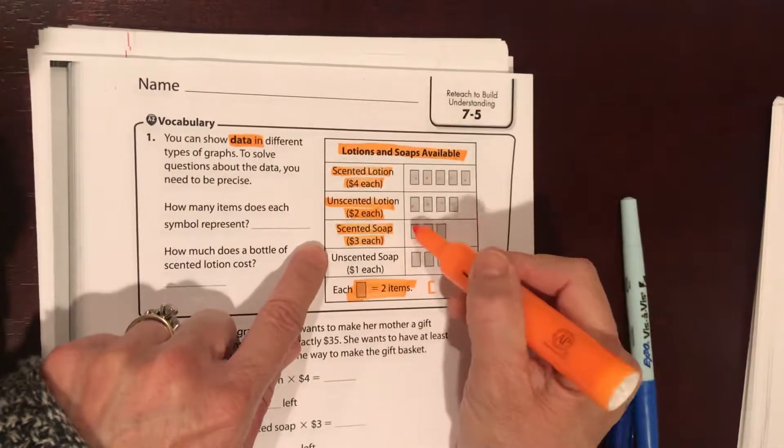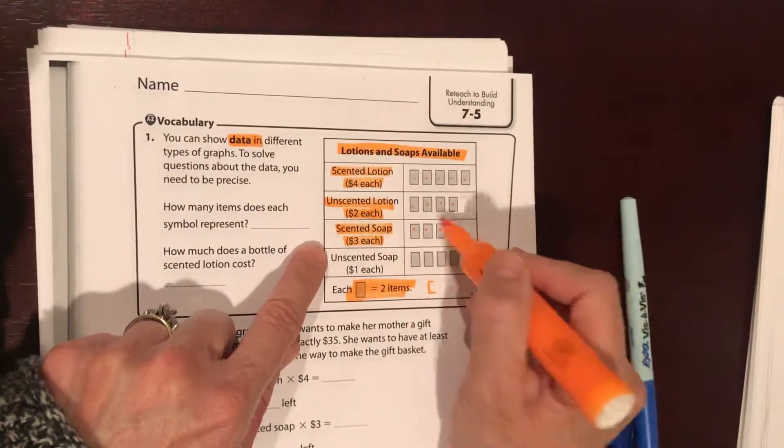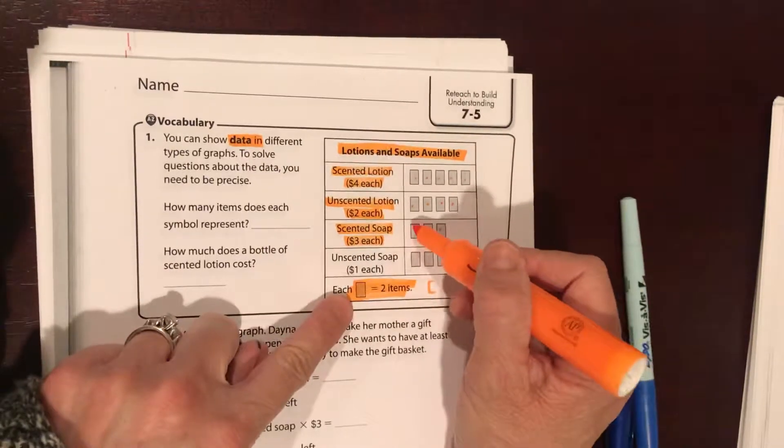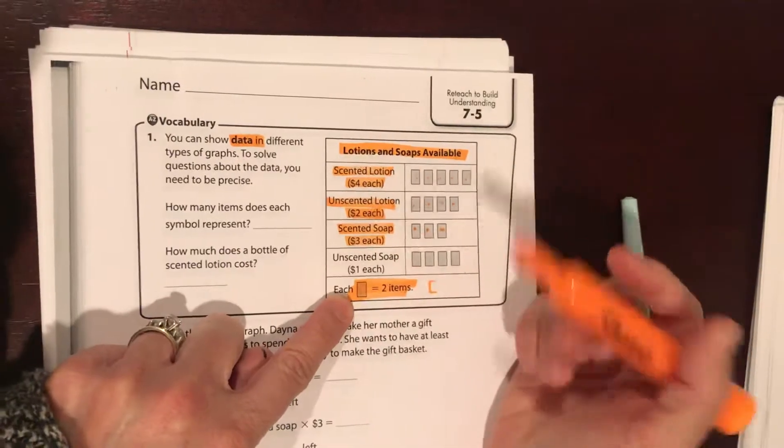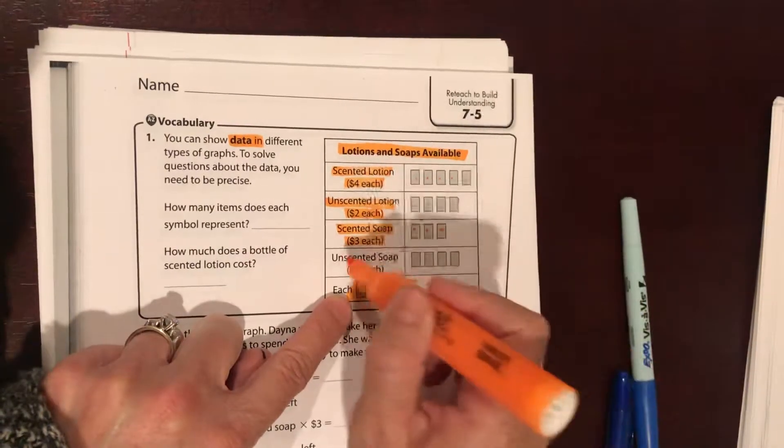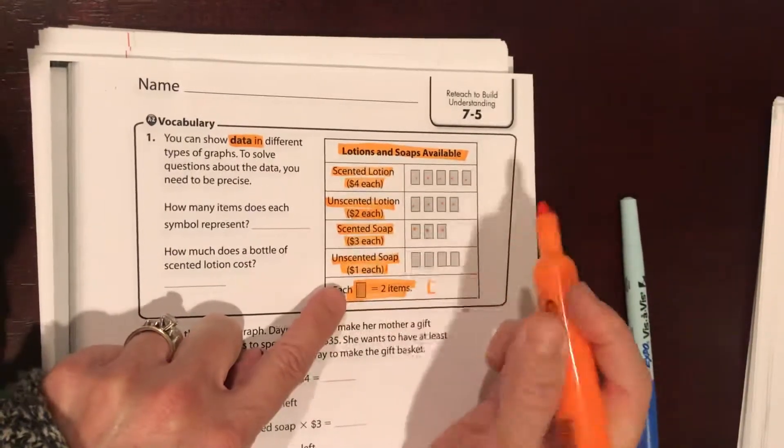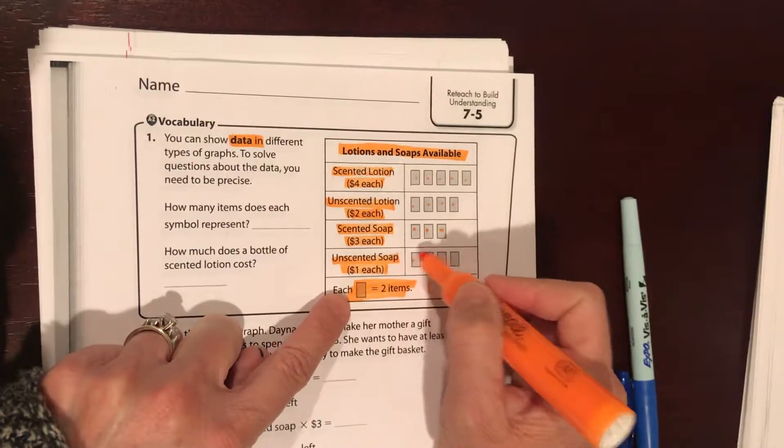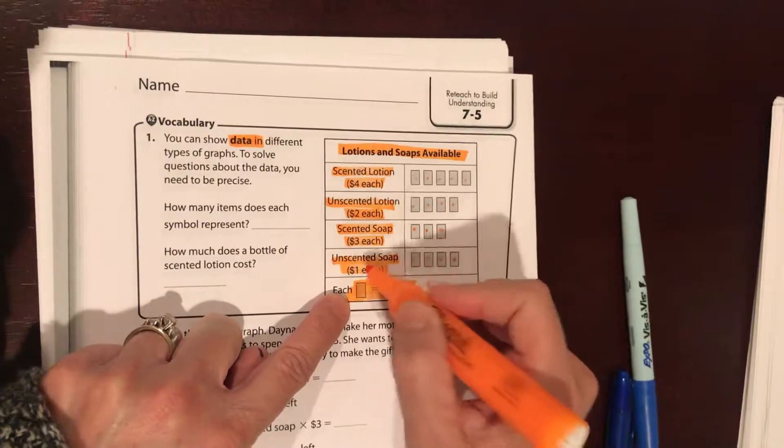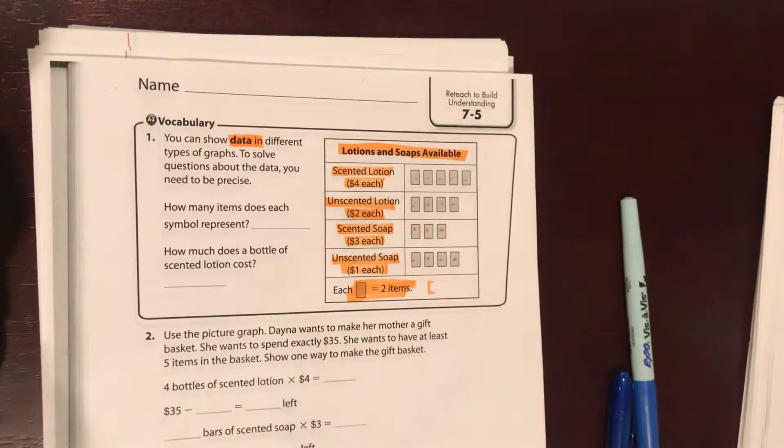Scented soaps are three dollars each, there's six available times three, that would be eighteen dollars. And then unscented soap, bars of soap that don't have any fluffy smell to them, there's two, four, six, eight available times one dollar each. So if we wanted to buy all of their unscented soap it would be eight dollars.